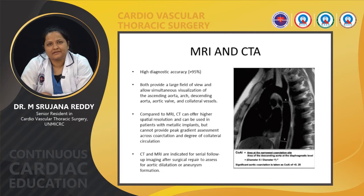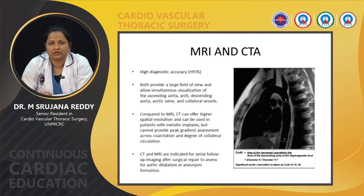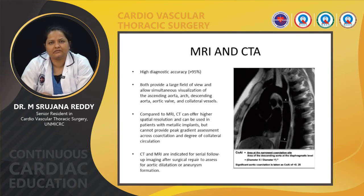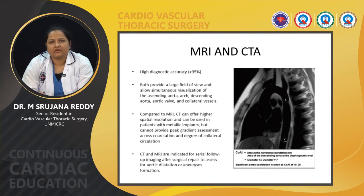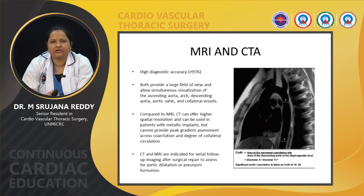Coming to MRI and CT angiography, they have a very high diagnostic accuracy of more than 95%, providing a large field of view to visualize the entire aorta including ascending aorta, arch, descending aorta, collaterals, and valve. Compared to MRI, CT has better spatial resolution and can be used in patients with metallic implants, but cannot provide peak gradient assessment across the coarctation or degree of collateral circulation. CT and MRI are indicated for serial follow-up imaging after surgical repair to assess aortic dilatation or aneurysm formation.